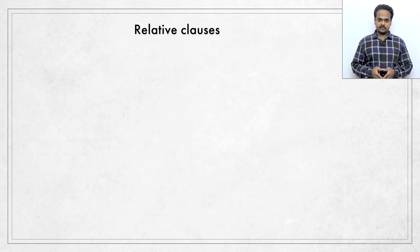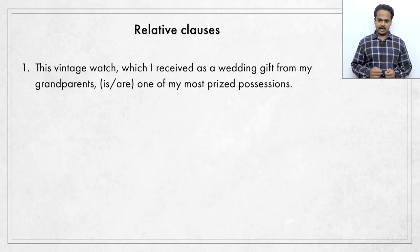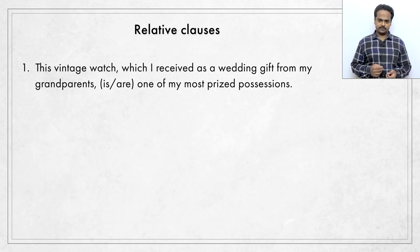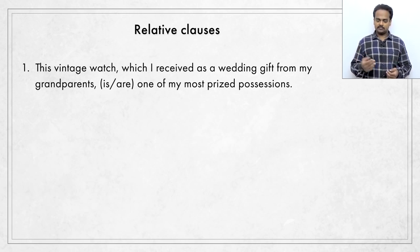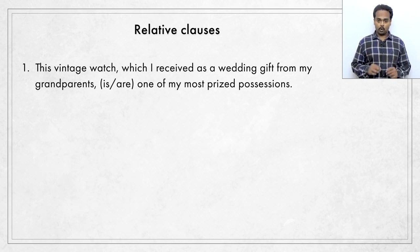Now just like prepositional phrases, relative clauses can also cause problems with subject-verb agreement. Take this example. This vintage watch, which I received as a wedding gift from my grandparents, is or are one of my most prized possessions. A vintage object is an old object that's attractive or of high quality, like vintage furniture, vintage cars, etc. So a vintage watch is an attractive old watch that's still in good condition. The word possession means something you own, and a prized possession is a thing that's very important to you. What do you think? Is or are here?